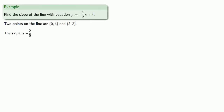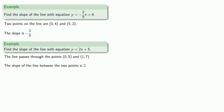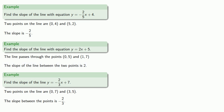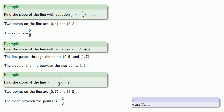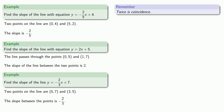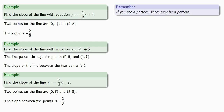We calculated the slope of y equals negative 2/5 x plus 4 to be negative 2/5. We calculated the slope of y equals 2x plus 5 to be 2. And the slope of y equals negative 2/3 x plus 7 was negative 2/3. As the saying goes, once is an accident, twice could be coincidence, but three times is a pattern. We see the coefficient of x and the slope are the same each time.